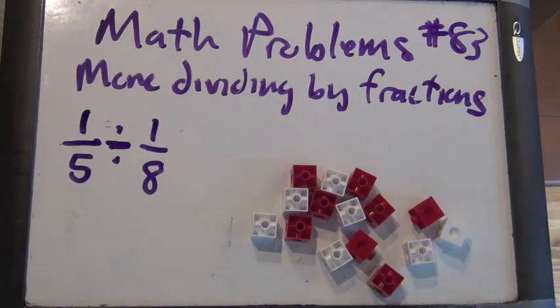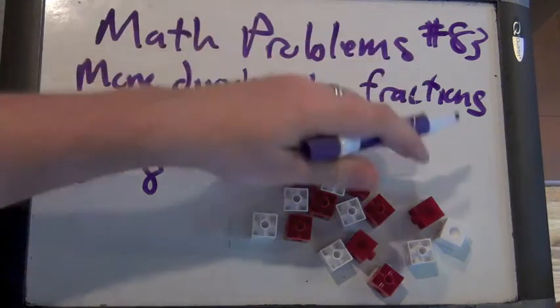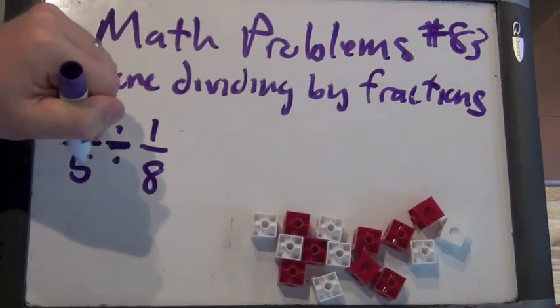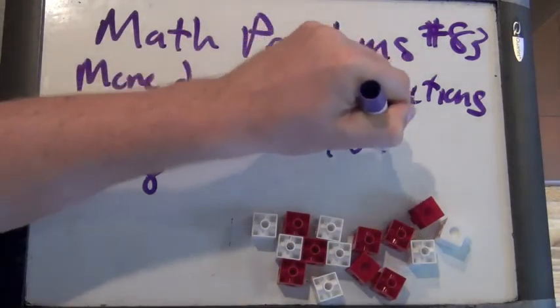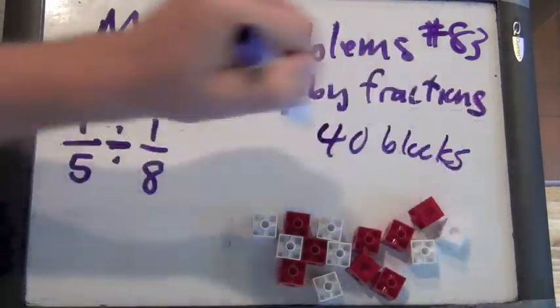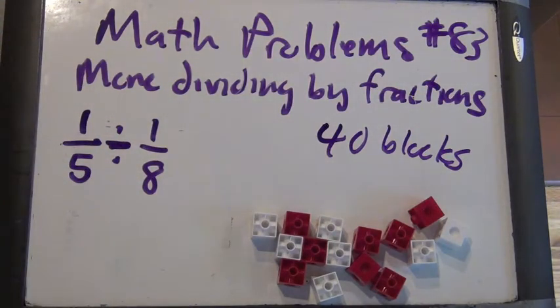But we're going to... I don't think we have 40 blocks. Well, that's okay. So 40 would be something we could divide by 5 and by 8. So 40 blocks. What would be 1 fifth of 40? 8 blocks.